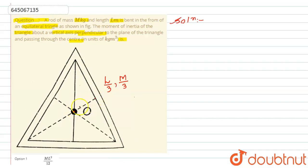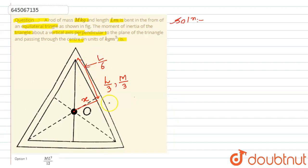From point O, the perpendicular distance to one side is x. The half-length of one side of the triangle is L/6, since the full length of one side is L/3, so half of that is L/6.